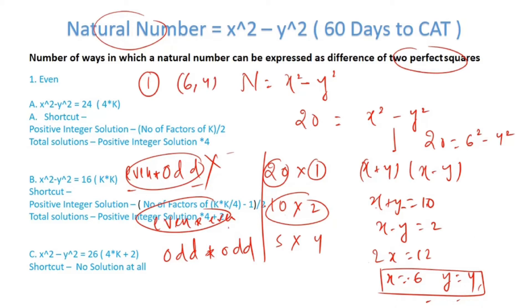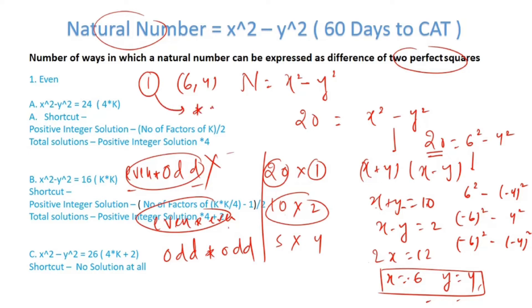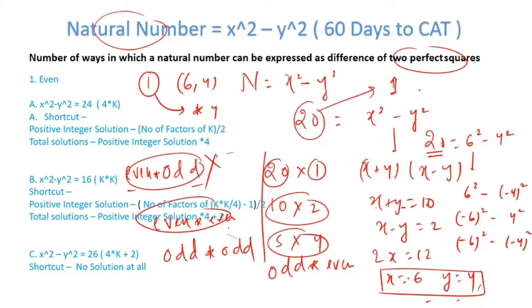But will the total number of solutions equal 1? No — because I can write 20 as 6² minus (-4)², as (-6)² minus 4², and as (-6)² minus (-4)². So the total number of solutions is 1×4. Now for the factorization 5×4, can it be expressed as a difference of two perfect squares? It cannot, because it is an odd×even case — and for odd×even, remember there is no solution. So for 20: positive integer solutions = 1, total integer solutions = 4.